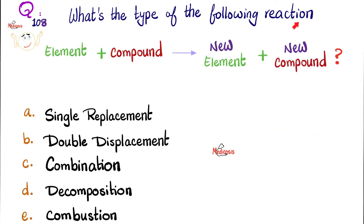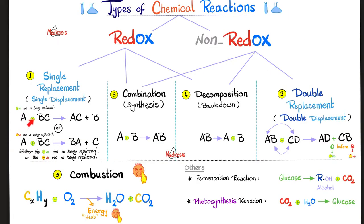Here's another one. What's the type of the following reaction? Element plus compound yields new element plus new compound. Who's that? Please pause. And the answer to this one is good old single replacement. Element plus compound yields new compound and new element.